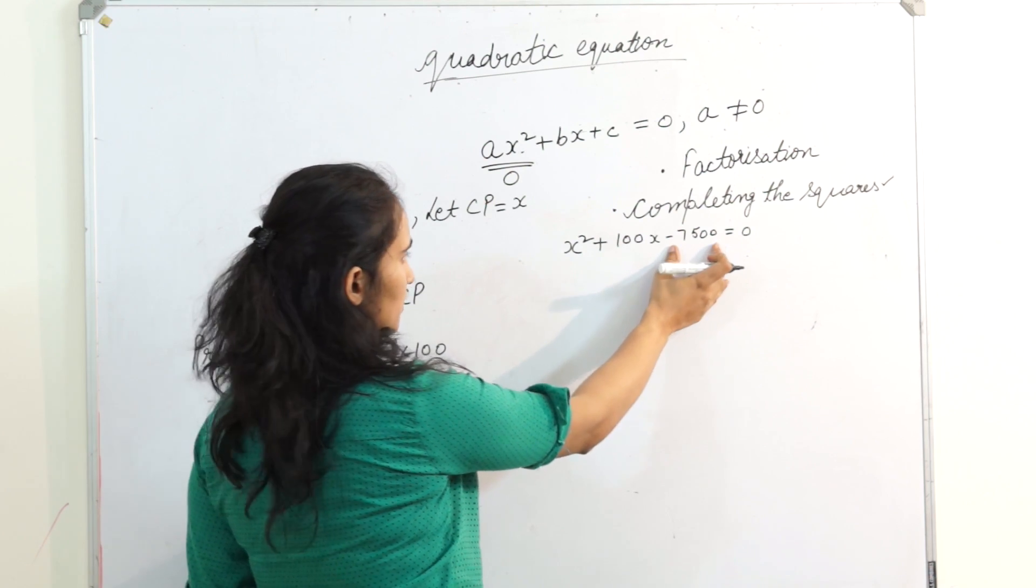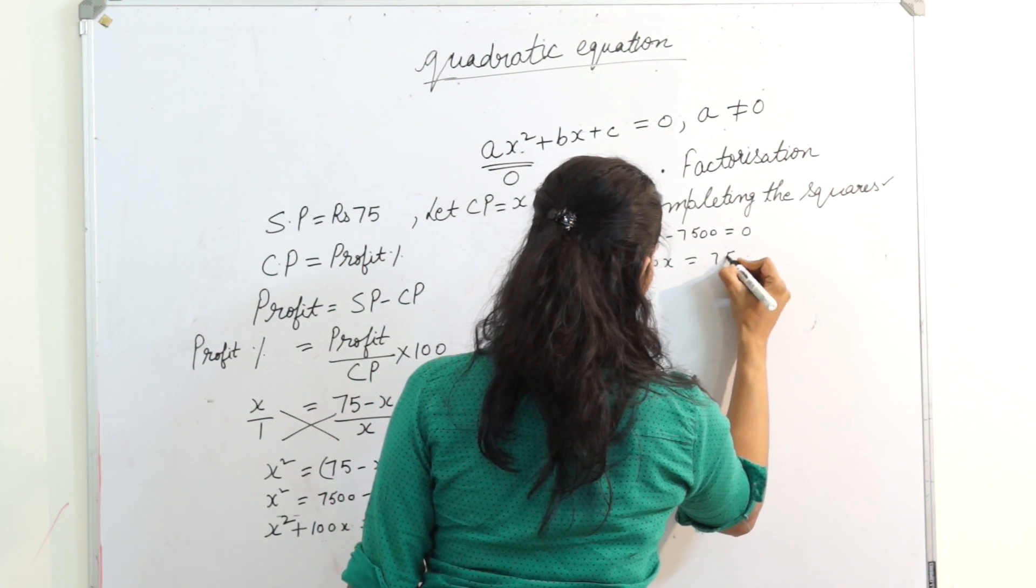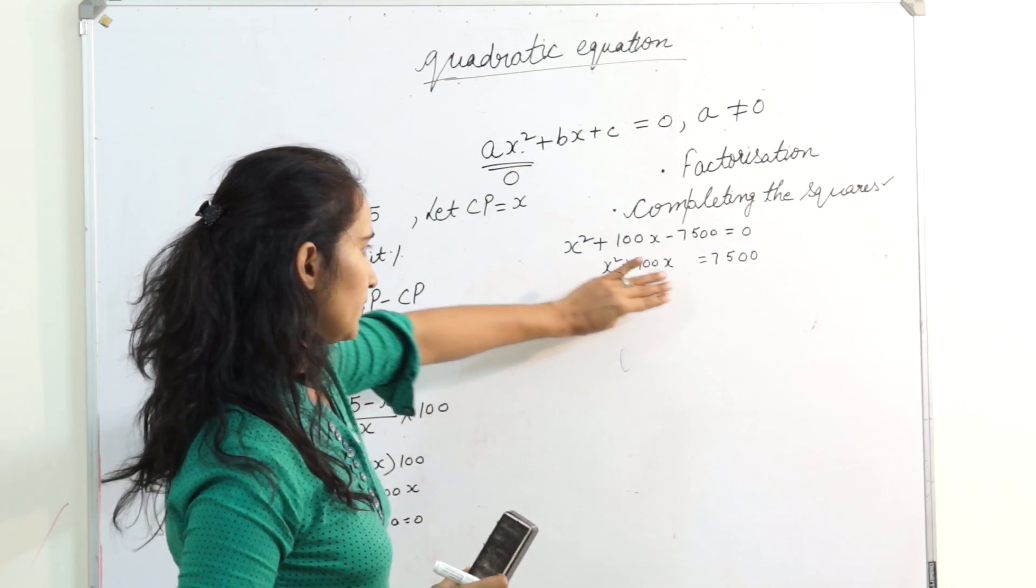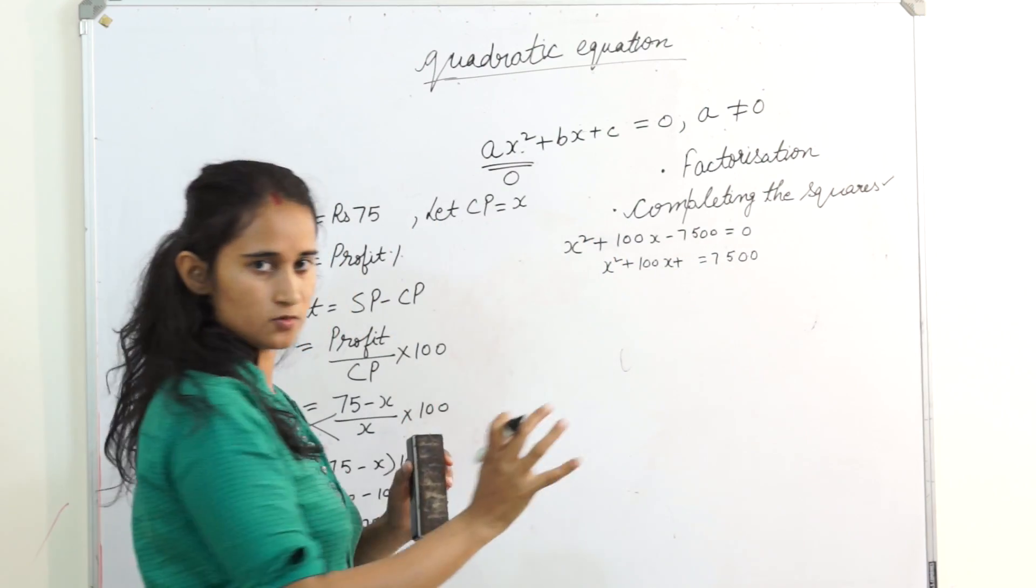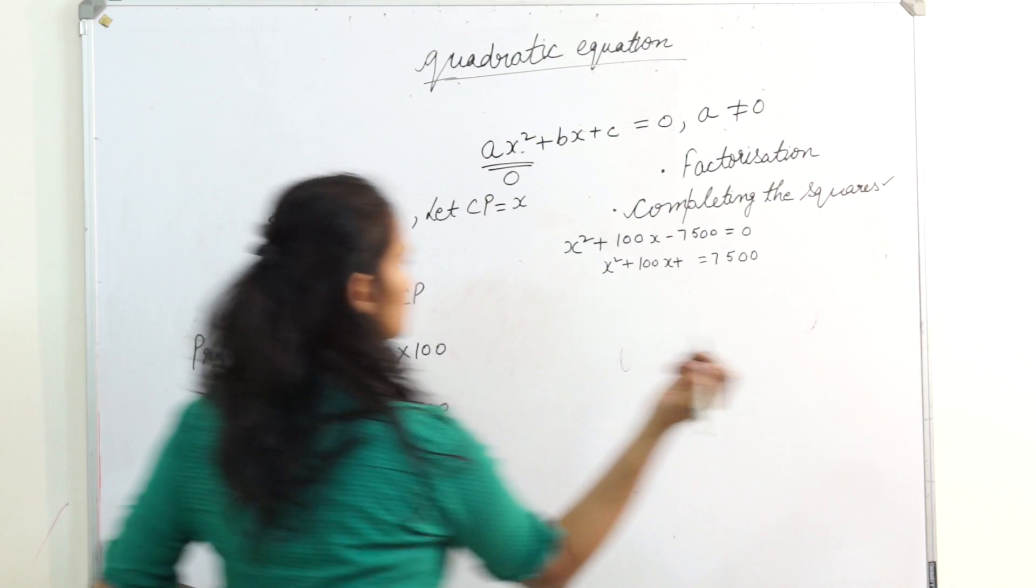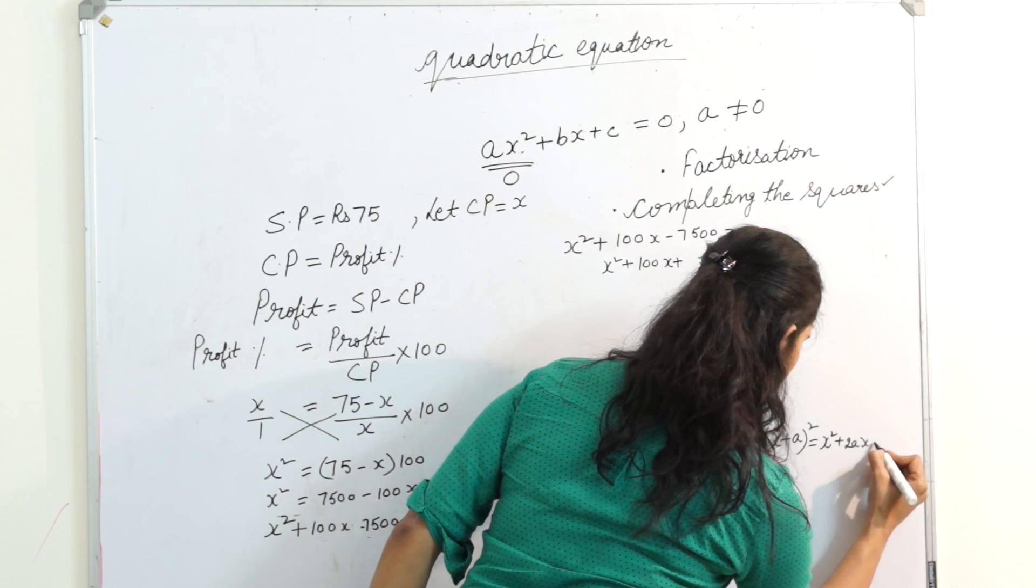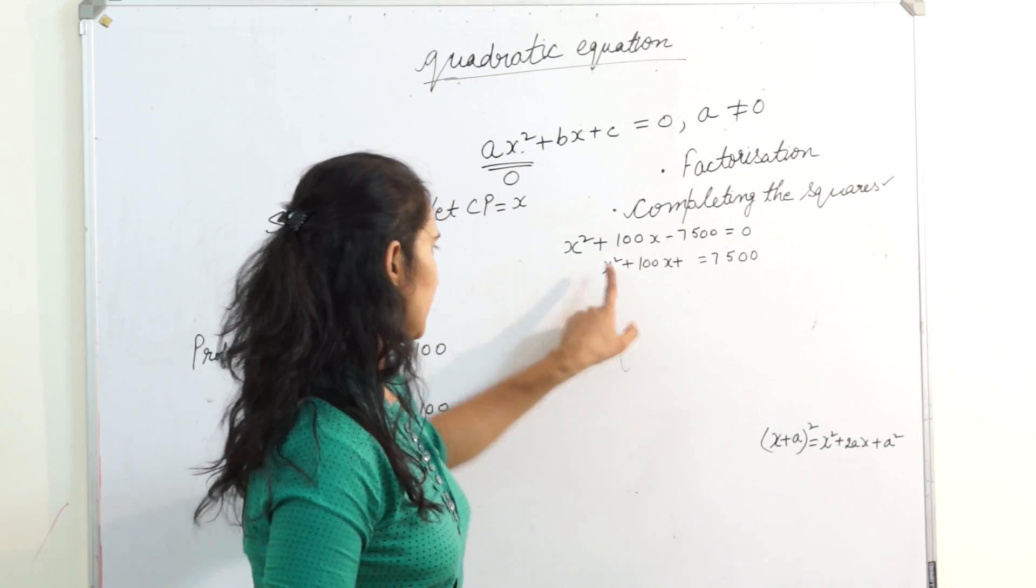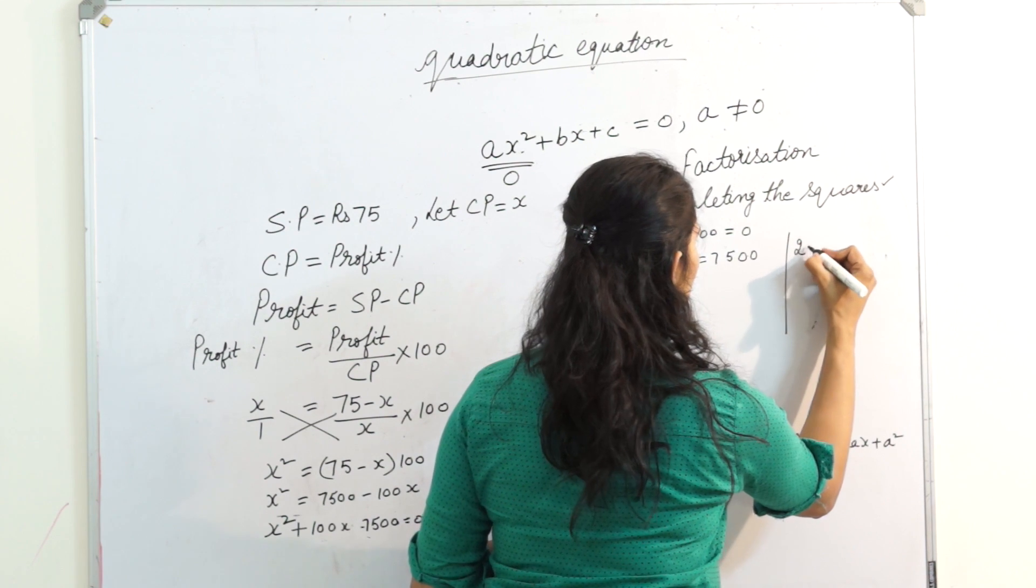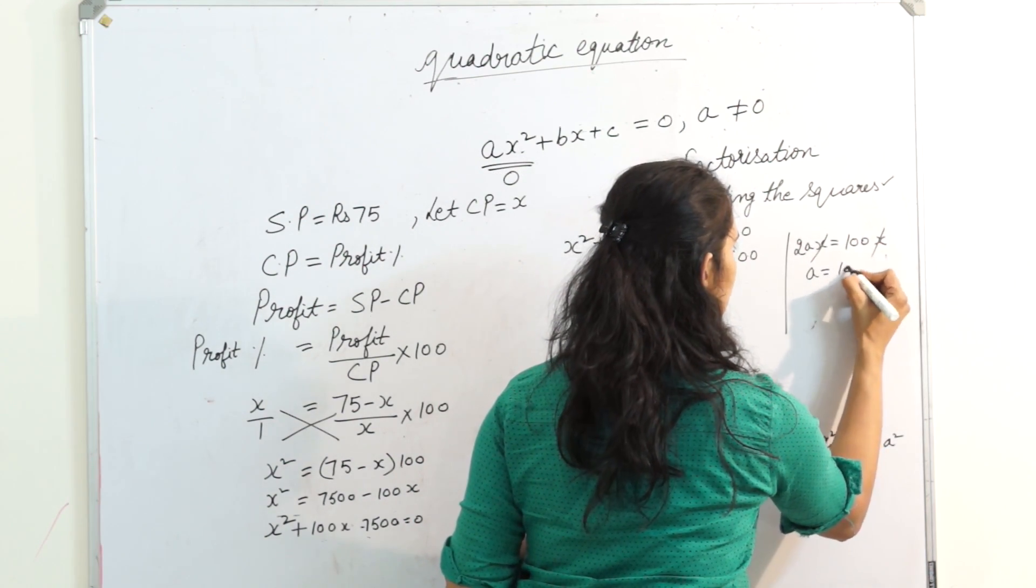Let's take this constant term without x on the right-hand side. I leave here some space. Can you see here? x square plus 100x plus something. If I add any whole number, then I can make x plus a whole square. What is my formula for x plus a whole square? x square plus 2ax plus a square. Yes, I have my x square. Let's take this term as 2ax. Let's equate it here. 2ax equals 100x. xx got cancelled. a equals 100 by 2, so a is 50.